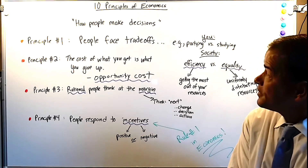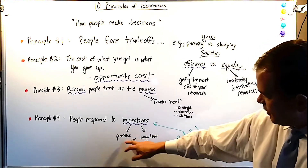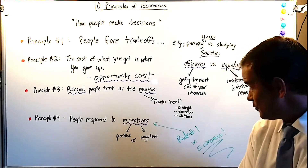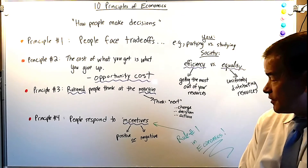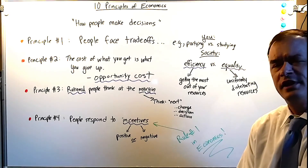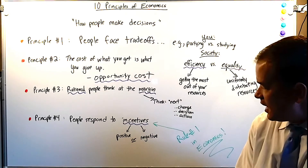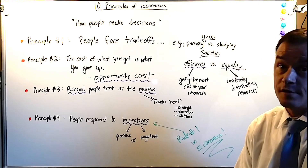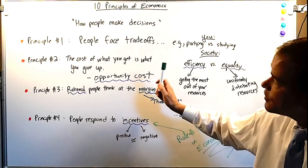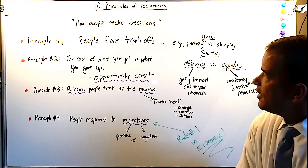Principle number four — and my favorite — people respond to incentives, both positive and negative. This may be principle four in economics, but it's rule number one. If I told you there's a suitcase with $10 million down the street and you can have it right now, that's a positive incentive to run and find it. A negative incentive would be: if you rob a store, you go to prison for ten years. Rational people thinking at the margin, recognizing opportunity cost and trade-offs, will respond to these incentives to make better decisions.